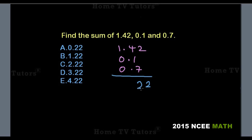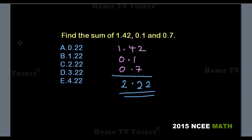We carry the 1 to the next column after the decimal point on the left. We bring down the decimal point. The 1 added to the 1 already in the column gives us 2. So we have 2.22. The answer option C is the right answer.